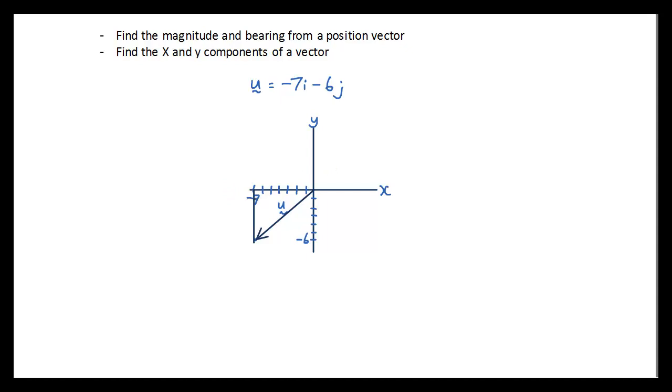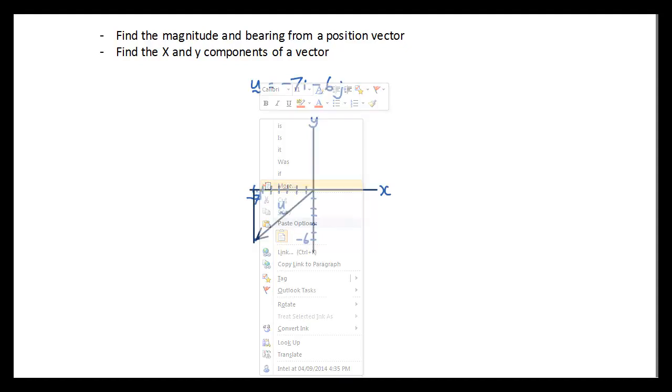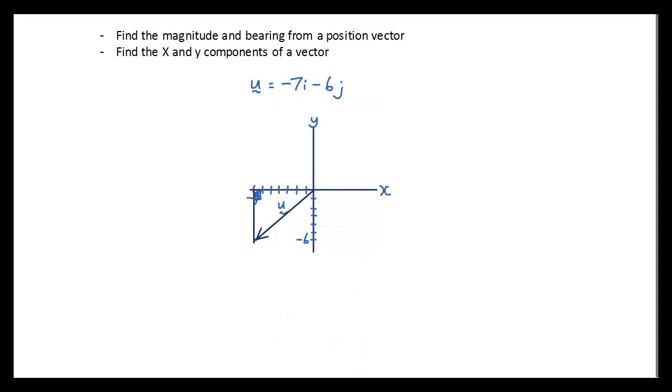Now this creates a right angle triangle. So here is a right angle triangle. This is the right angle triangle. And we can therefore use trigonometry and Pythagoras to find the magnitude and the bearing.